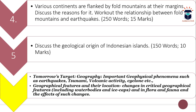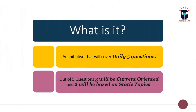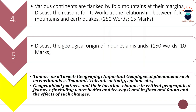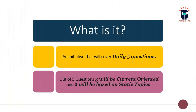For students seeing this video for the first time, let me explain what this initiative is about. Daily five questions are given to you — three are current affairs-oriented and two are based on static topics. For example, today the fourth and fifth questions were from the static topic. We follow a detailed 99-day timetable covering your entire GS1 to GS4 syllabus by allocating each day to a particular topic, progressing in a planned way.